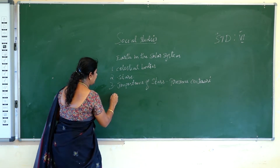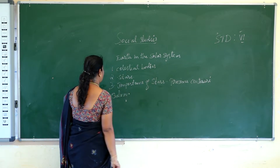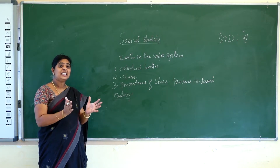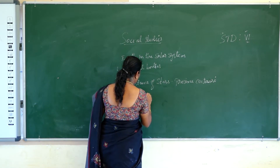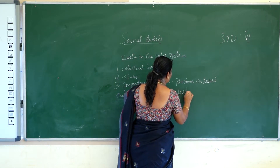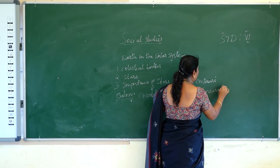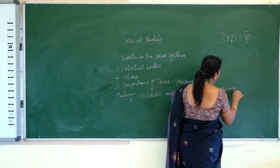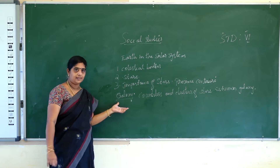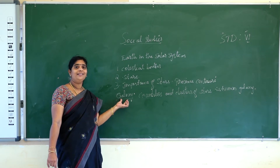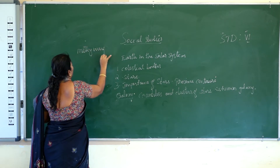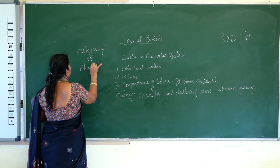Next we are going to see about the galaxy. What is a galaxy? A galaxy is countless clusters of stars. Our solar system is a part of one such galaxy, known as the Milky Way or Akash Ganga.